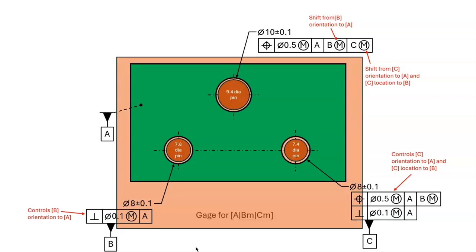Now let's look at our shift calculations. At datum feature B, the gauge will have a fixed size pin at size 7.8. That's equal to the smallest allowable hole of 7.9 minus the perpendicularity tolerance of 0.1. The maximum possible shift occurs when the datum hole is at its largest allowable size of 8.1 and has no perpendicularity error. The 8.1 hole fitting around the 7.8 pin will allow shift of 0.3. At datum feature C, the gauge will have a fixed size pin at size 7.4. That's equal to the smallest allowable hole of 7.9 minus the position tolerance of 0.5. The maximum possible shift occurs when the datum hole is at its largest allowable size of 8.1 and has no perpendicularity error and no position error.